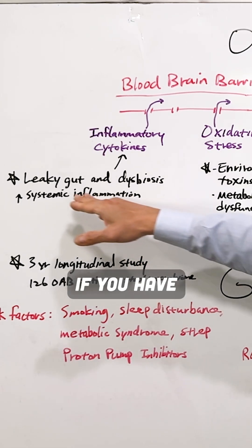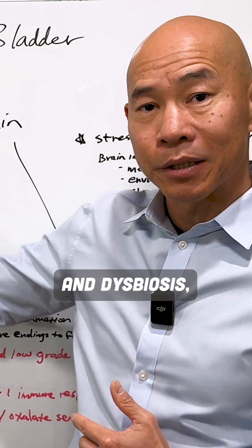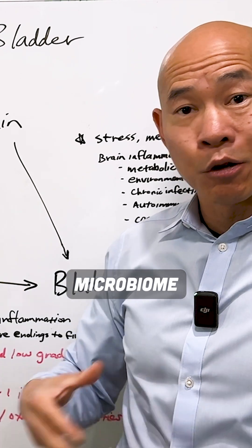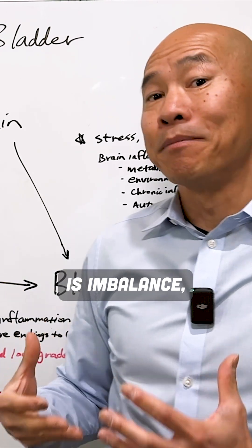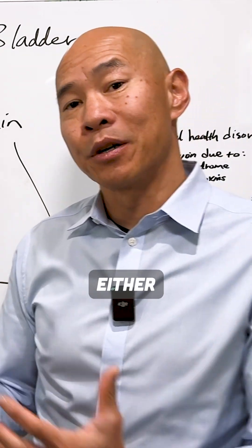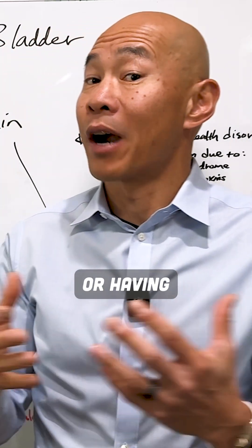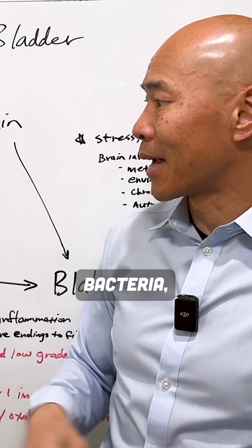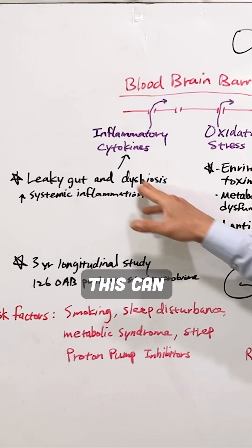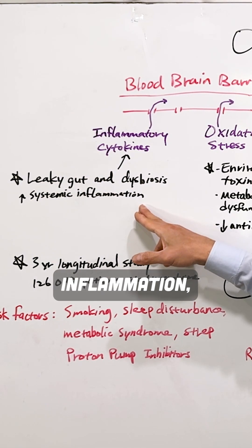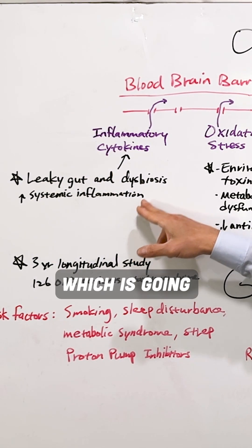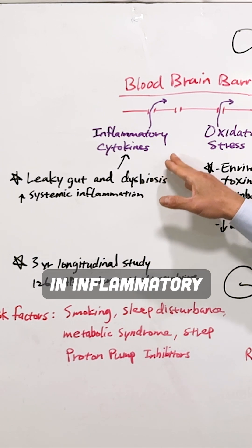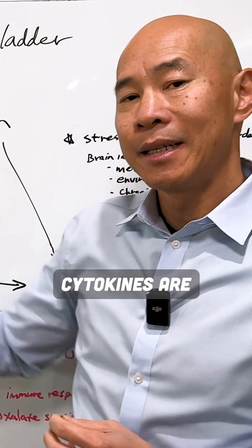Now, if you have leaky gut and dysbiosis — which means the gut microbiome is out of balance, either not having enough beneficial bacteria or having too much of the opportunistic bacteria — this can all cause systemic inflammation, which is going to translate into an increase in inflammatory cytokines.